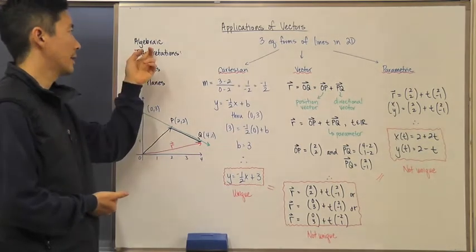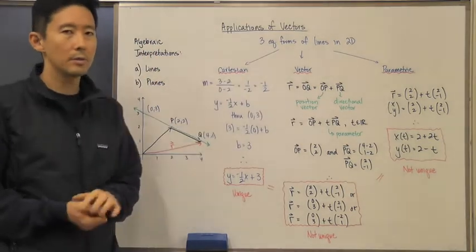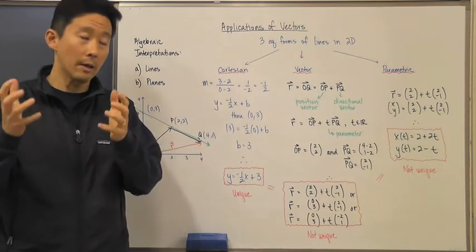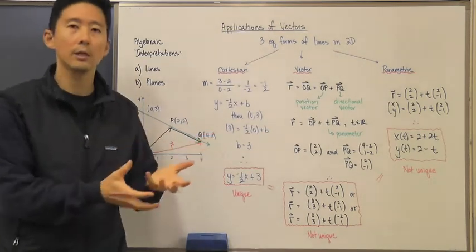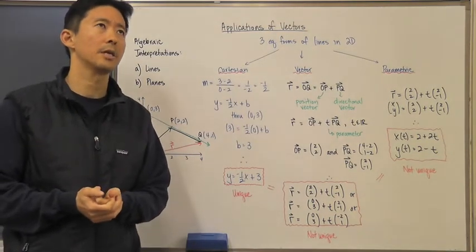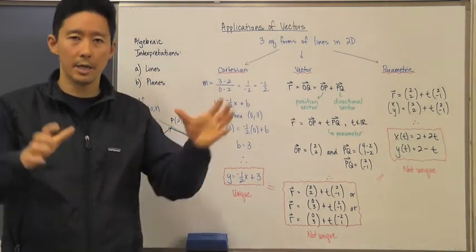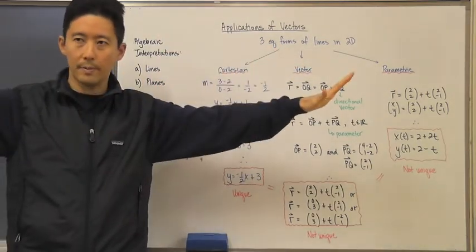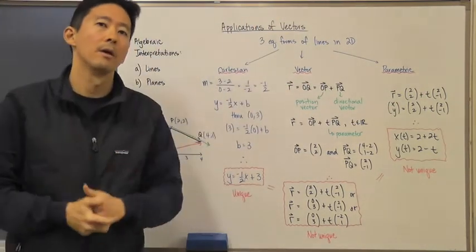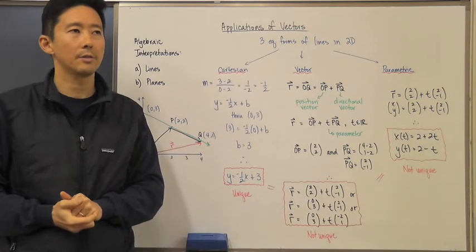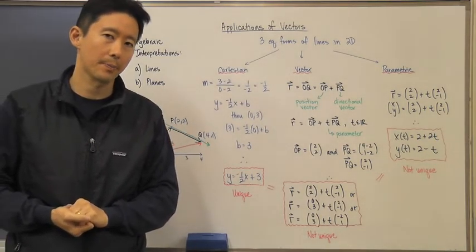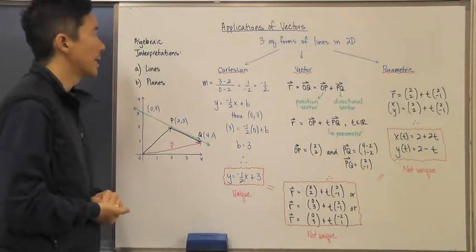We're actually going to be able to use vectors to describe lines in algebraic form as well as planes in algebraic form. With lines we always had both a geometric and an algebraic interpretation, but when it comes to planes the only interpretation we used to have was a geometric one — just a flat object that goes off in a particular direction forever.